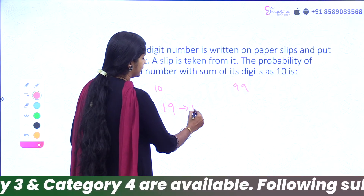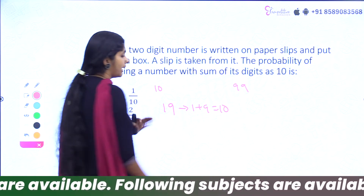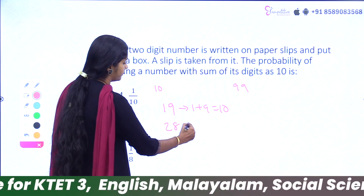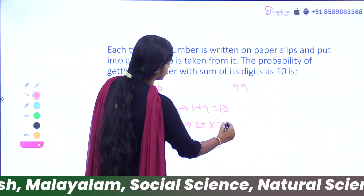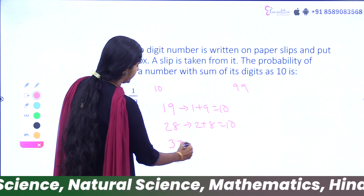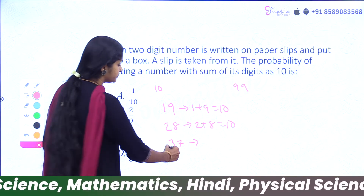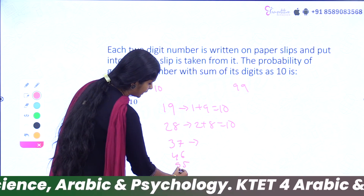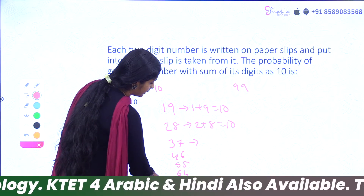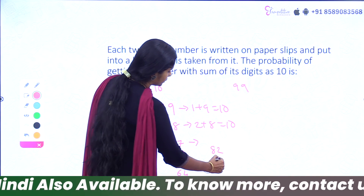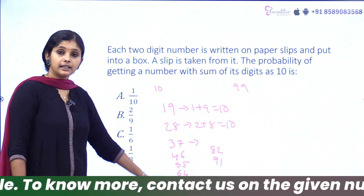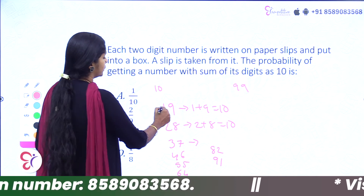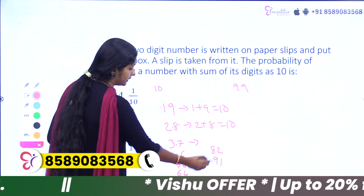The numbers whose digits sum to 10 are: 19, 28, 37, 46, 55, 64, 73, 82, 91. Counting these: 1, 2, 3, 4, 5, 6, 7, 8, 9 — there are 9 such numbers.